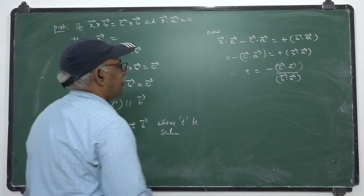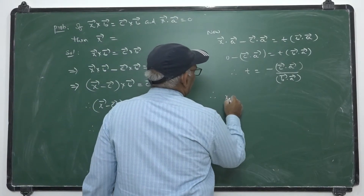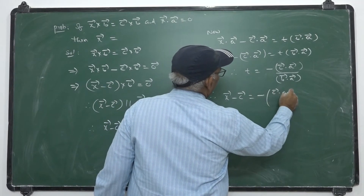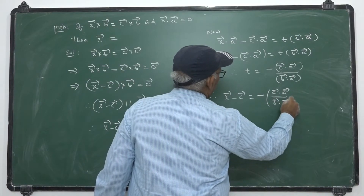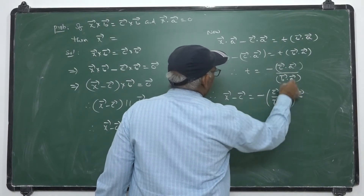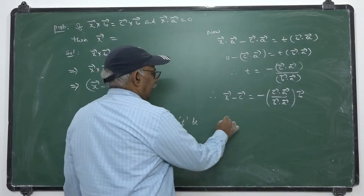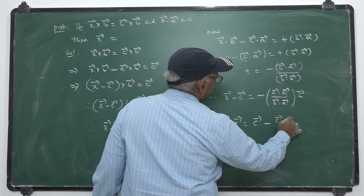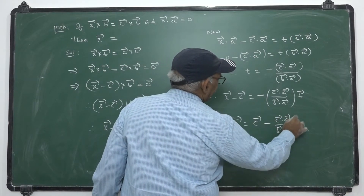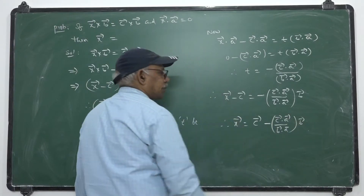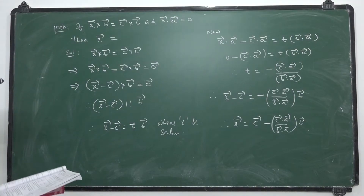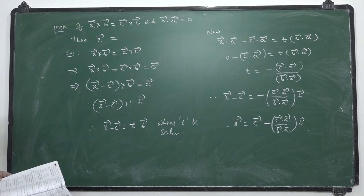Therefore, x̄ = c̄ + t·b̄ = c̄ + [-(c̄·ā)/(b̄·ā)]·b̄. Since t is this value, x̄ can be written as c̄ minus (c̄·ā)/(b̄·ā) multiplied by b̄. That means x̄ may be written in terms of ā, b̄, c̄ and their dot products.